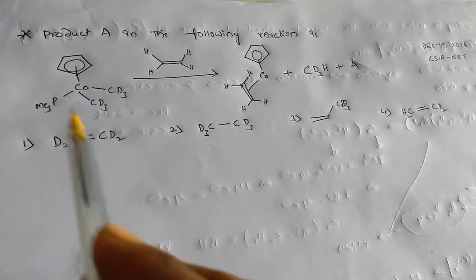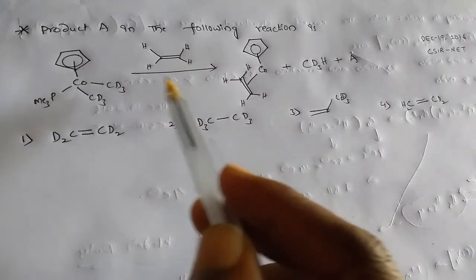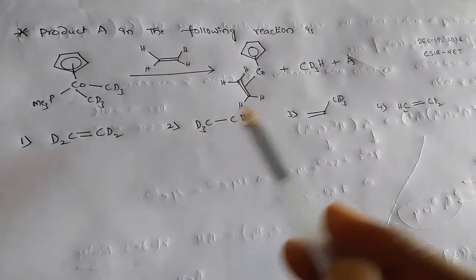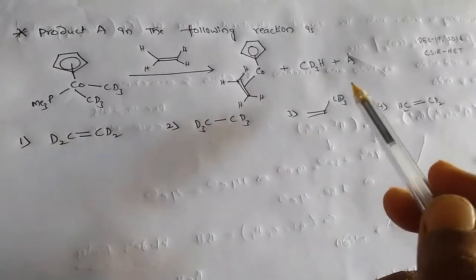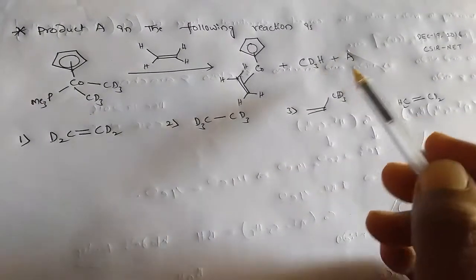We have cobalt complex and olefin is reacting on it and we have these three products. In these three, what is A?